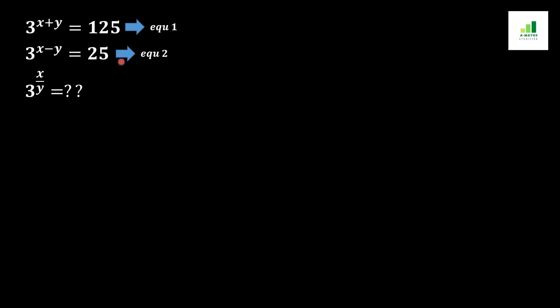In the first step, we take equation number one and convert 125 into 5 to the power 3. So equation one becomes 3 to the power x plus y equals 5 to the power 3. Next, we multiply both sides of the equation with 1 over x plus y in the power, giving us 3 equals 5 to the power 3 over x plus y. This is equation number three.